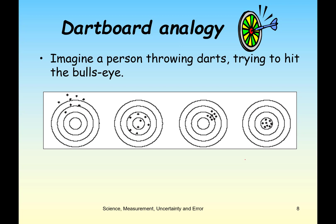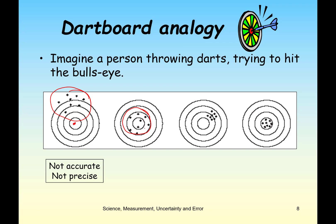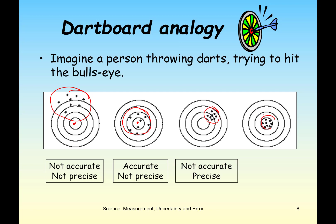We can illustrate precision and accuracy with a dartboard, imagining a person throwing darts trying to hit the bullseye. In the first case, darts are not near the bullseye and spread out — not accurate and not precise. In the second case, darts are spread out but on average at the center — accurate but not precise. In the third case, throws are consistent and reproducible but off the bullseye — precise but inaccurate. In the fourth case, there is little variability and the average is on the bullseye — both precise and accurate.